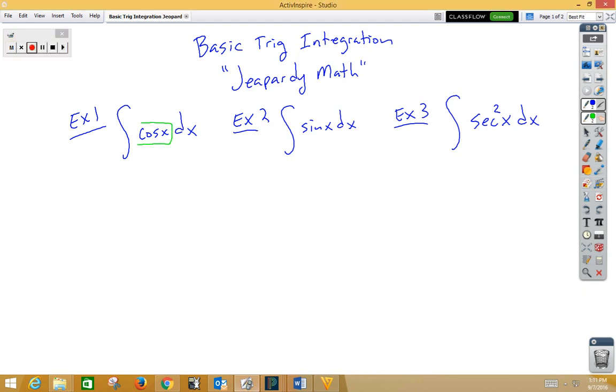So here we have an answer of cosine. Well, the derivative of sine is cosine. Therefore, when you integrate, you get sine of x plus C. We put a plus C because there could be some constant added in that turns to zero when we take the derivative that we are unaware of.